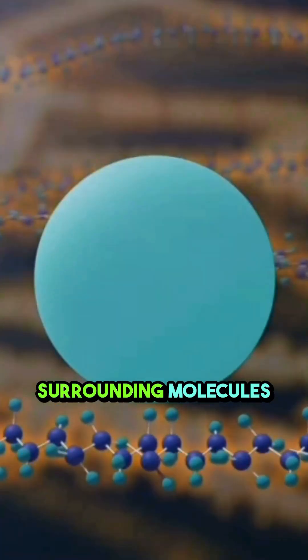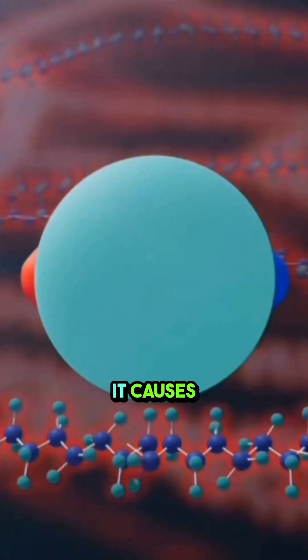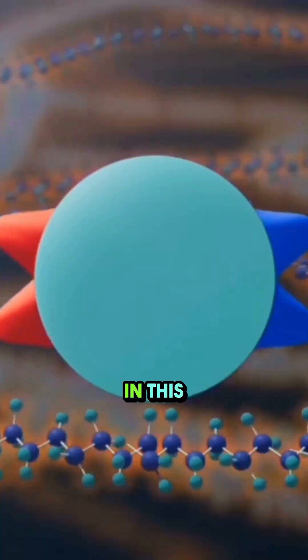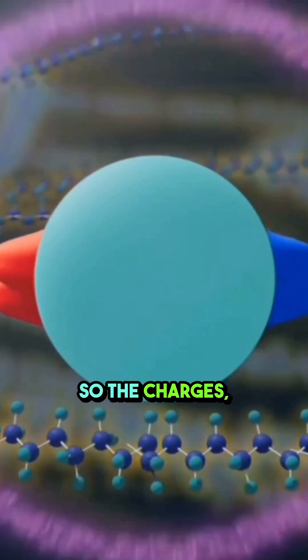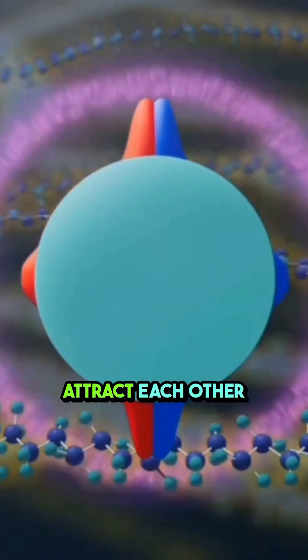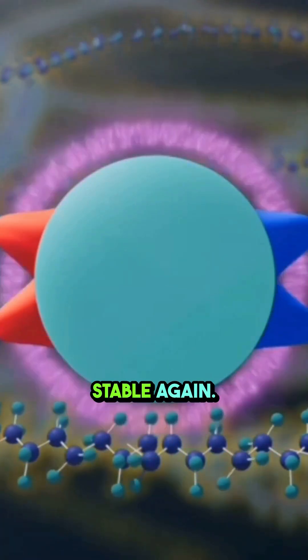When the surrounding molecules heat up, it causes a charge imbalance in this unique particle, making it unstable. So the charges, both negative and positive, attract each other to make it stable again.